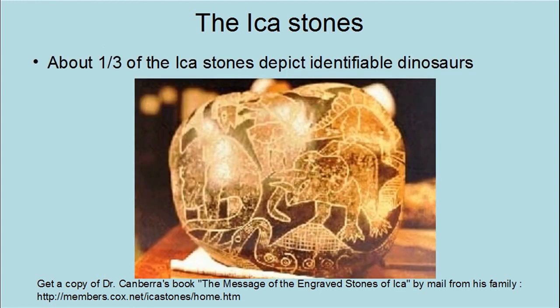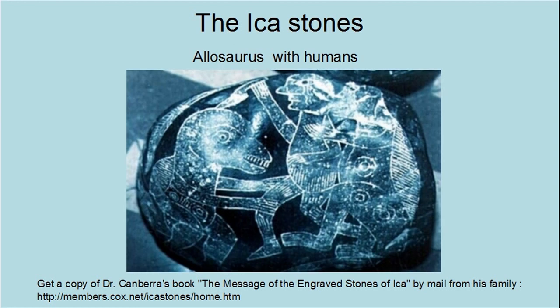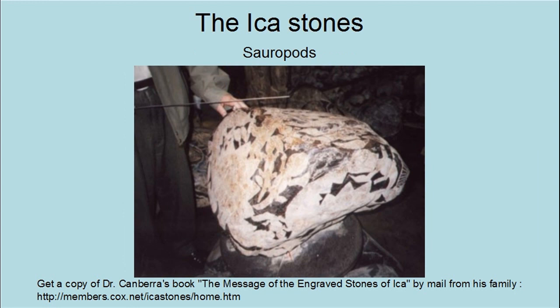About a third of the Ica Stones depict identifiable types of dinosaurs. This one depicts a human being fighting an Allosaurus — no indication as to who won. This stone depicts a Sauropod dinosaur with people. Interestingly, fossilized Sauropod skin, discovered after the stones were found, shows that some Sauropod dinosaurs had boneless spines on their backs as depicted on the stones.